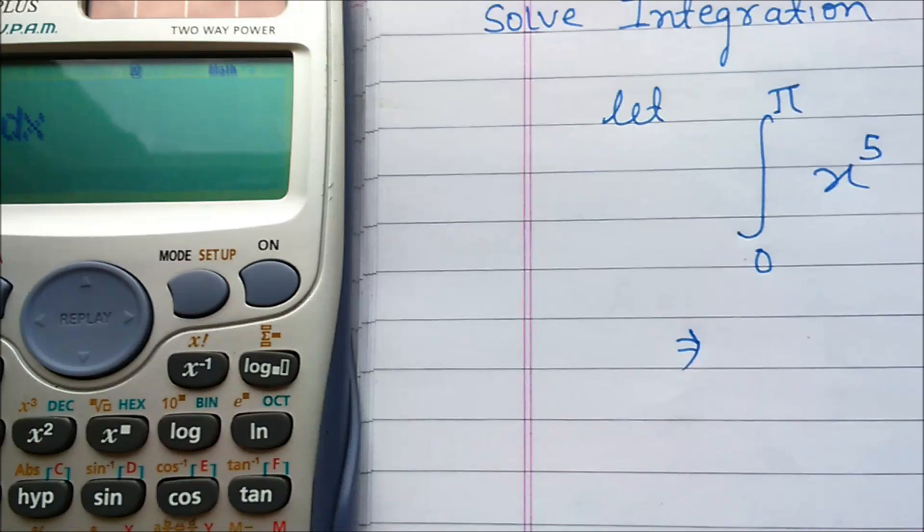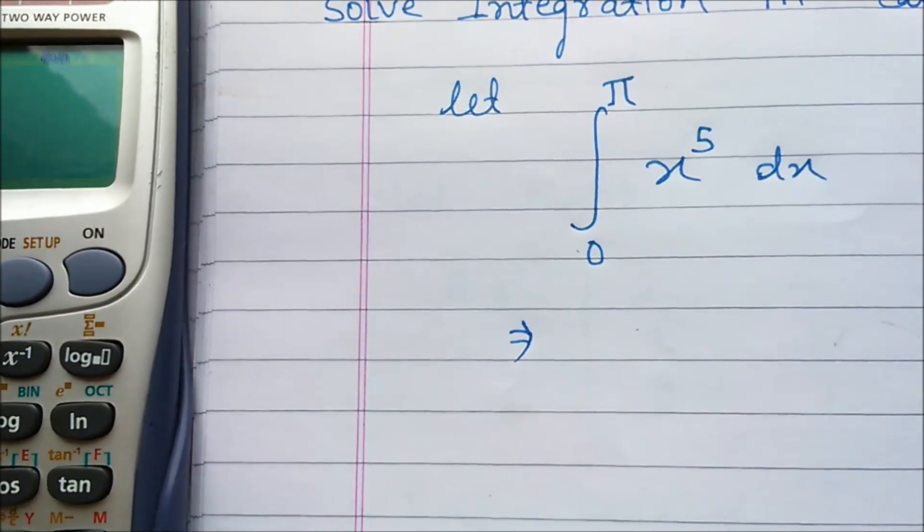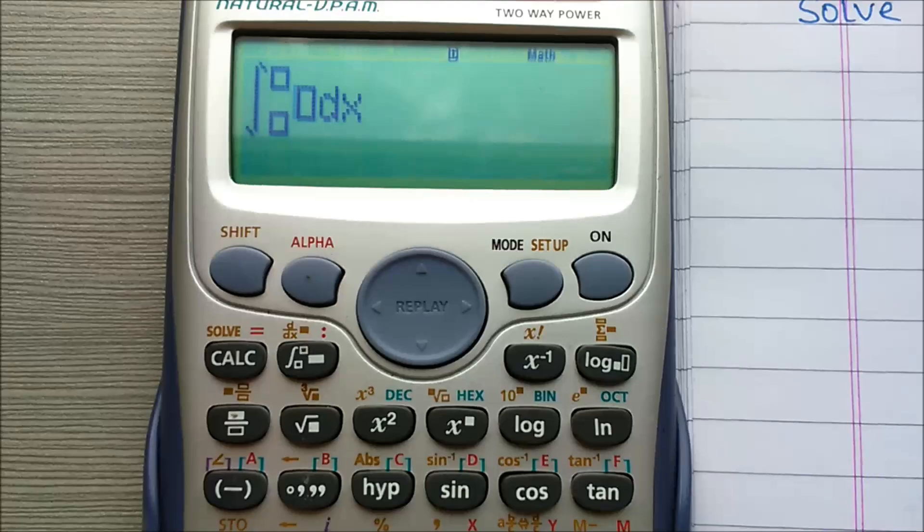The data is 0 to pi, x to the power 5 dx. How will you fill here?